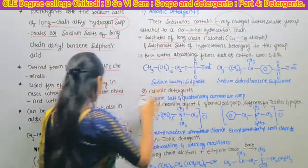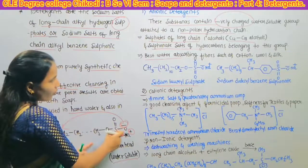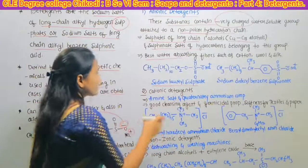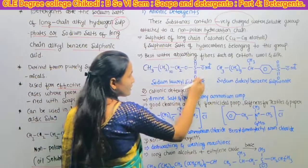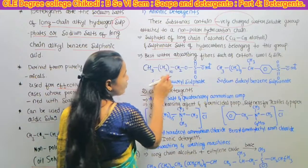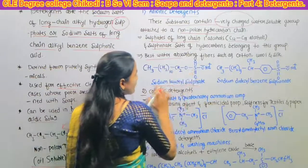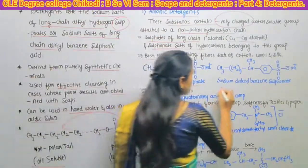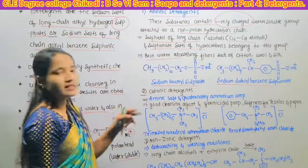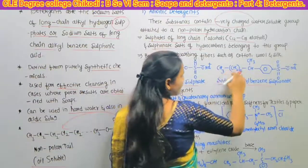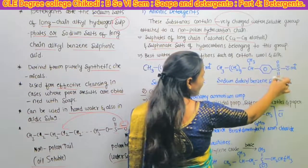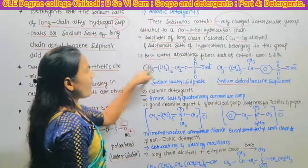See here some examples of anionic detergents. First one is sodium lauryl sulfate, which contains O-S(=O)(=O)-O minus Na plus, with an alkyl chain CH3-(CH2)10-CH2-O. The next one is sodium dodecyl benzene sulfonate: CH3-(CH2)9-CH(CH3) attached to a benzene ring with S(=O)(=O)-O minus Na plus.